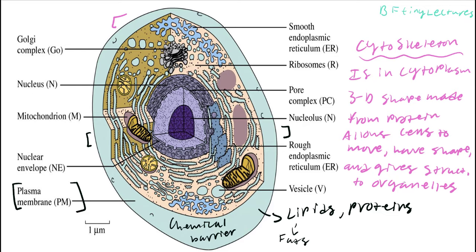As a recap: the cytoskeleton is found within the cytoplasm, which is 20 to 30% protein. Those proteins give the cell its shape because they make up the cytoskeleton, and the cytoskeleton provides shape to the cell and its organelles — to the mitochondria, to the nucleus, etc. It is very important for structure and rigidity.